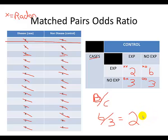The way we interpret that number is very similar to relative risk, but with case-control studies we start our analysis with the disease group. So in our description we also start with the disease group: if you have lung cancer, you are two times more likely to have been exposed to radon than if you don't have lung cancer, even when we control for smoking. And that is how we do a matched pairs odds ratio.